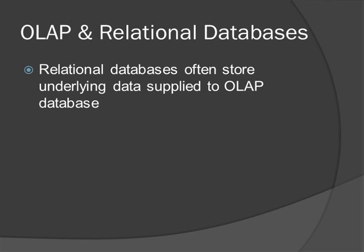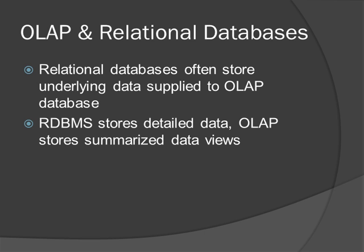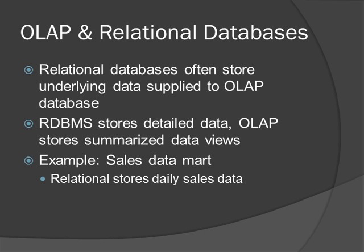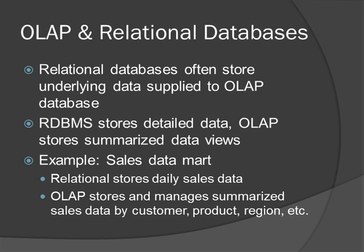Given all of these benefits of OLAP databases, especially performance, you might be wondering what role traditional relational databases play in data warehouse architecture. Within the data warehouse itself, a relational database is often used in conjunction with OLAP databases to host data marts, in some cases supplying data to the OLAP databases. In this scenario, the relational database typically stores more detailed data than the OLAP database, which contains a summarized view. For example, to support sales analysis, a sales data mart may contain a relational component to host detailed daily sales data and an OLAP component to store summarized sales data by customer, product, month, and region.